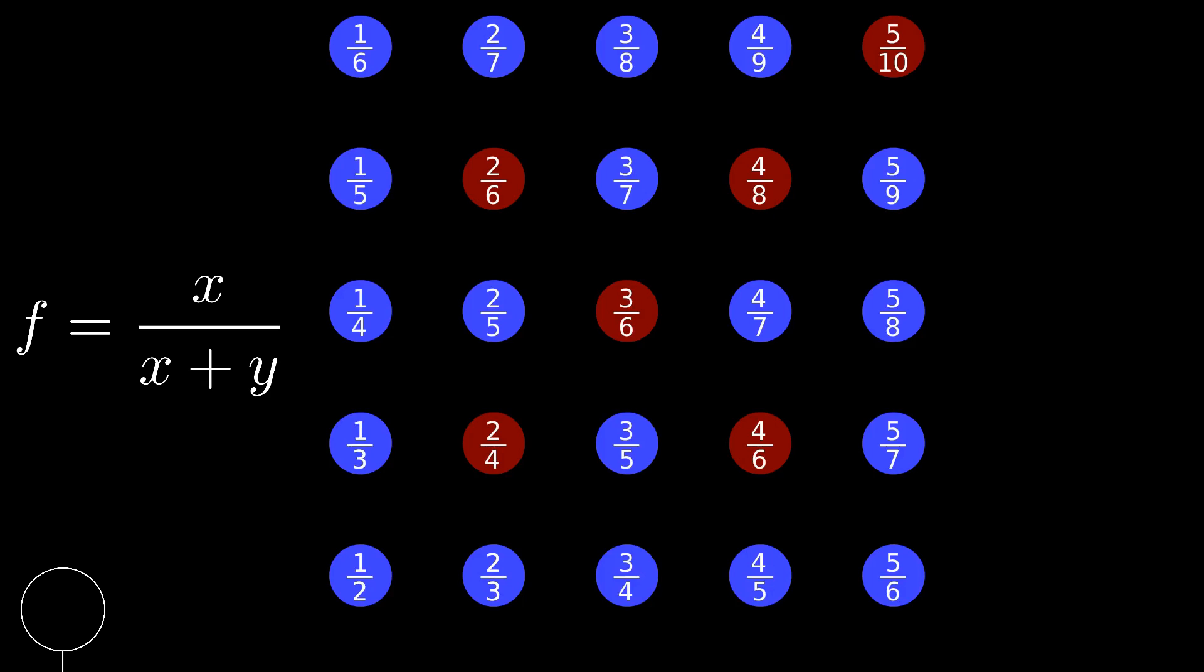there's actually a pattern that arises between the trees that we can and cannot see. Can you see it? Pause now if you want to figure it out on your own. Otherwise, I'm just going to go ahead and tell you. All of the trees that we cannot see are blocked by the tree that they fractionally reduce down to.